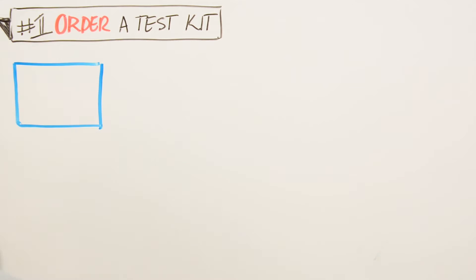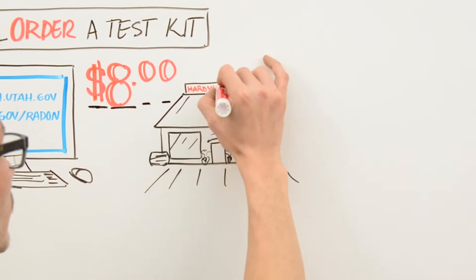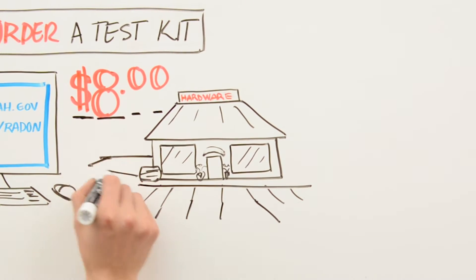If you live in Utah, go to radon.utah.gov to order a test kit for about $8. If you live in another state, go to EPA.gov/radon to learn where you can get a test kit. You can also get kits at your local hardware store or home center.